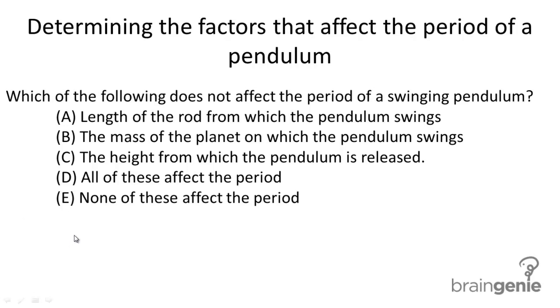Now remember, the formula for the period of a pendulum is given by T equals 2π times the square root of the length of the pendulum divided by g.